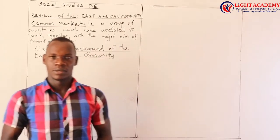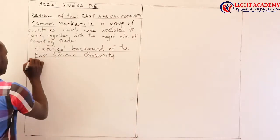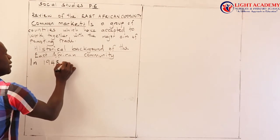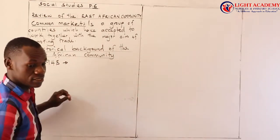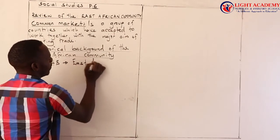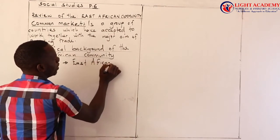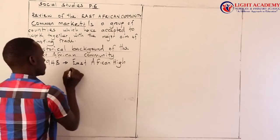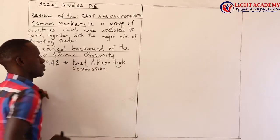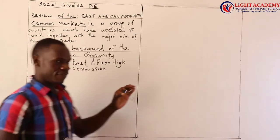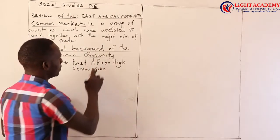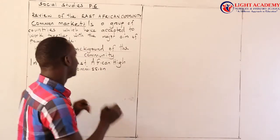Let's remind ourselves: in 1948, the East African Community we have today started as the East African High Commission. It started as the East African High Commission in that year. Then it changed.